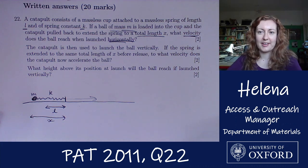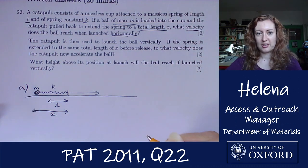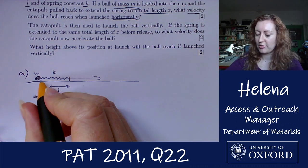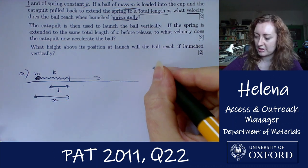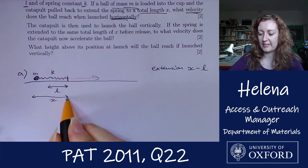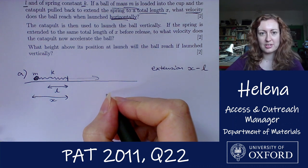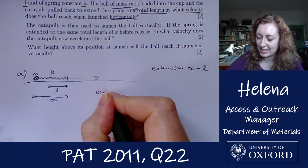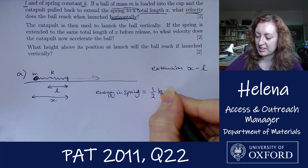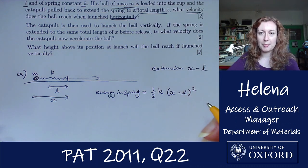We're asked for the velocity of the ball, so we need to consider the energy of the system. For part A, finding the velocity launched horizontally: we've pulled back the spring to an extension of x minus l — that's the new total length x minus the natural equilibrium length l — and in doing so we've stored potential energy in the spring, which is one half times the spring constant k times the extension squared, so one half k times (x minus l) squared.